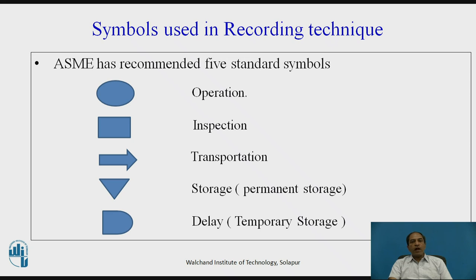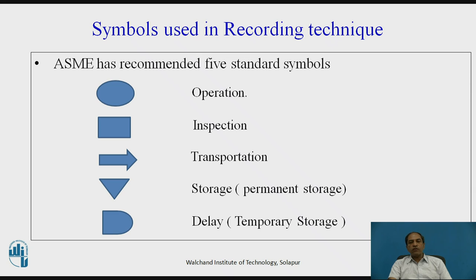ASME has defined charts and diagrams using basic symbols for recording. The first symbol is operation, represented by a circle. Next is inspection, represented by a rectangle — inspection can be done manually or on a machine. Transportation of material, person, or equipment from one place to another is represented by an arrow. There are two types of storage: temporary storage, where a job waits due to delays like machine breakdown or absenteeism, and permanent storage, which is the final stage after the job is complete.